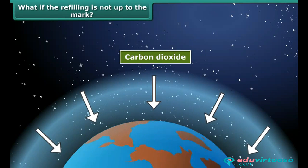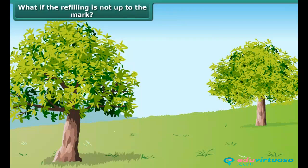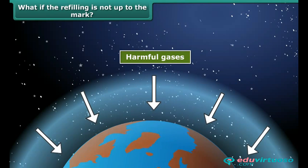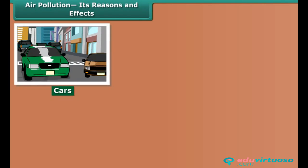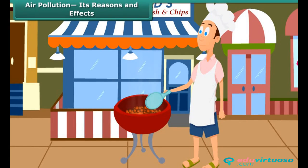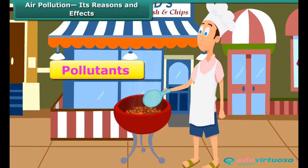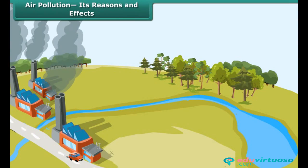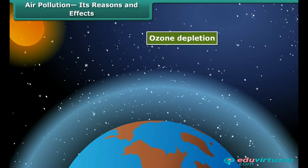What if carbon dioxide is pumped more into the atmosphere beyond the capacity of plants to maintain the carbon dioxide–oxygen balance? What if other harmful gases are released into the atmosphere? The answer is — it results in air pollution. Cars, scooters, air conditioners, refrigerators, and many other things release harmful gases that pollute air. The enormous amount of carbon dioxide formed during burning of coal also pollutes air. The substances that cause air pollution are called pollutants. Mainly, air pollutants are the gases discharged from industry and motor vehicles. Air pollution also creates global problems such as ozone depletion by gases like chlorofluorocarbon, and global warming by carbon dioxide.